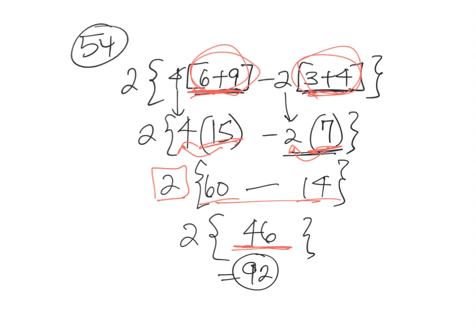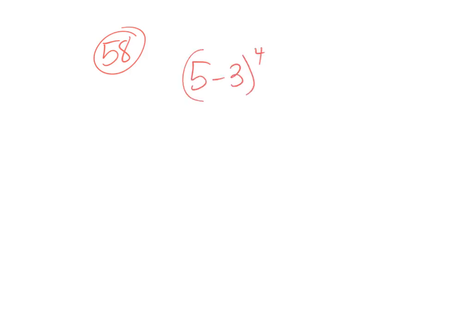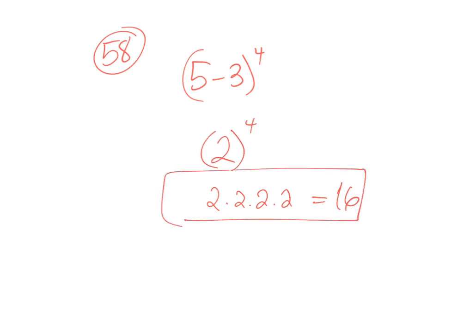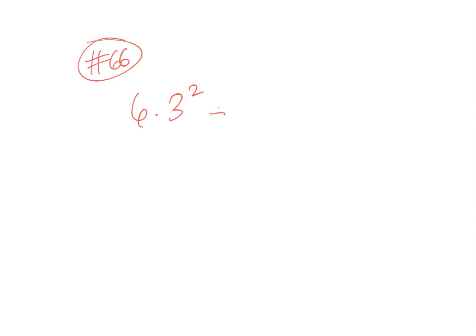Now let's look at exponents. Number fifty-eight: five minus three, the whole thing raised to the fourth power. Remember PEMDAS — parentheses first, then exponents. Five minus three is two, and two to the fourth power is two times two times two times two. Two times two is four, four times two is eight, eight times two is sixteen. So the answer is sixteen.